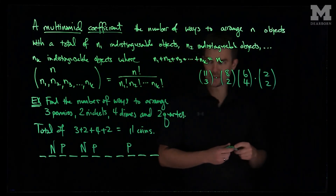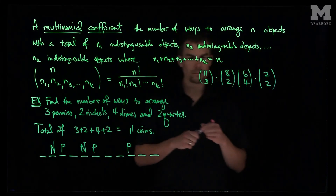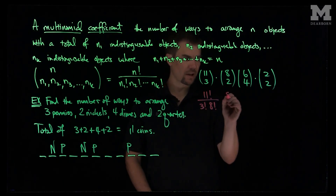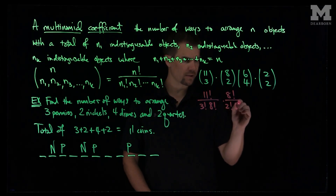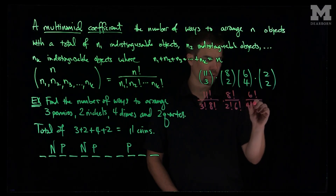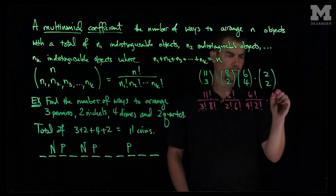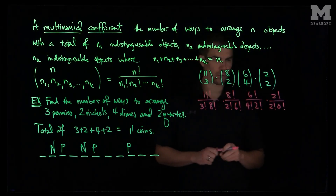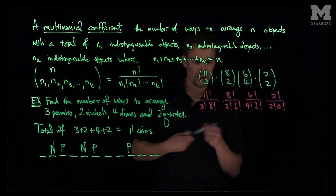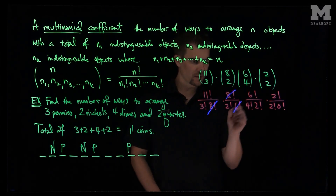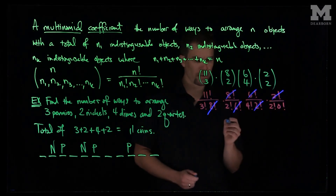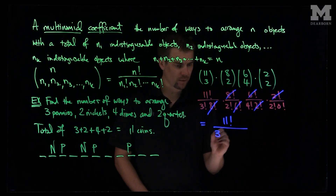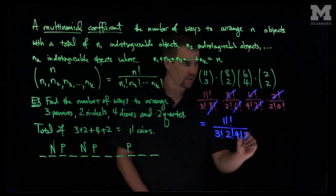If we write this out, we get: 11 factorial over 3 factorial times 8 factorial, times 8 factorial over 2 factorial times 6 factorial, times 6 factorial over 4 factorial times 2 factorial, times 2 factorial over 2 factorial times 0 factorial. We know 0 factorial equals 1, and the 8 factorial, 6 factorial, and 2 factorial terms cancel, leaving us with 11 factorial over 3 factorial times 2 factorial times 4 factorial times 2 factorial.